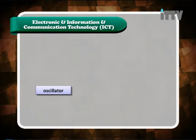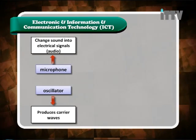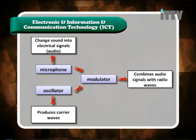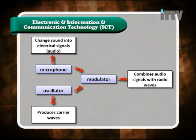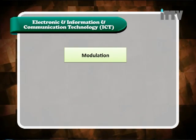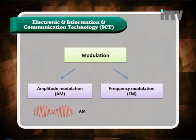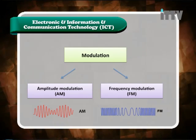An oscillator is used to produce radio waves called carrier waves. At the same time, a microphone is used to change sound waves into electrical signals called audio signals. The modulator combines the audio signal with the radio waves through a process called modulation. There are two types of modulation: amplitude modulation (AM) and frequency modulation (FM). In AM, the strength or amplitude of the radio waves varies; in FM, the frequency of the waves varies.